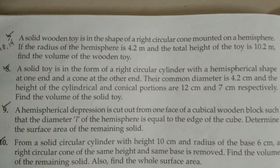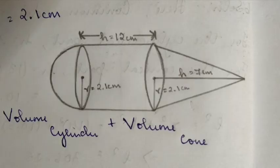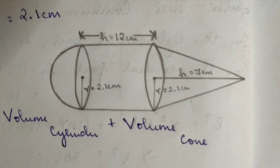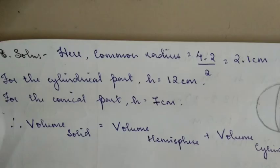Let's draw a diagram. The solid has a cylinder with a hemisphere on one side and a cone on the other side. The radius is common — from the diameter of 4.2 cm, the radius is 2.1 cm. The cylinder height is 12 cm and the cone height is 7 cm. We need to find the volume of the solid.